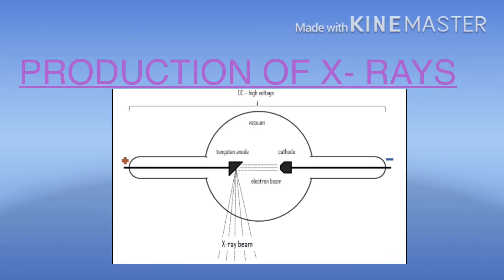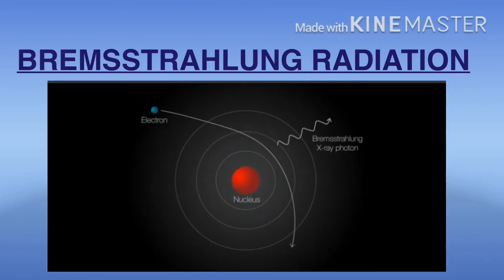When fast moving electrons suddenly decelerate, the energy is released in the target so that energy is produced as x-rays. The production of x-rays occurs in two main ways. First one is Bremsstrahlung Radiation.